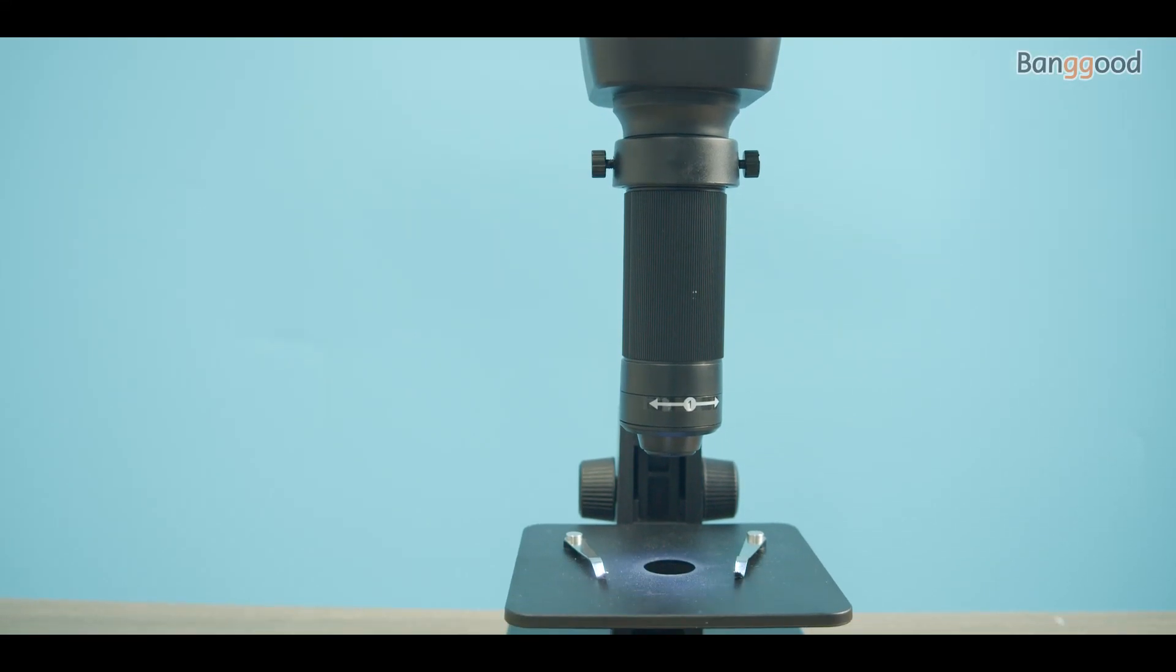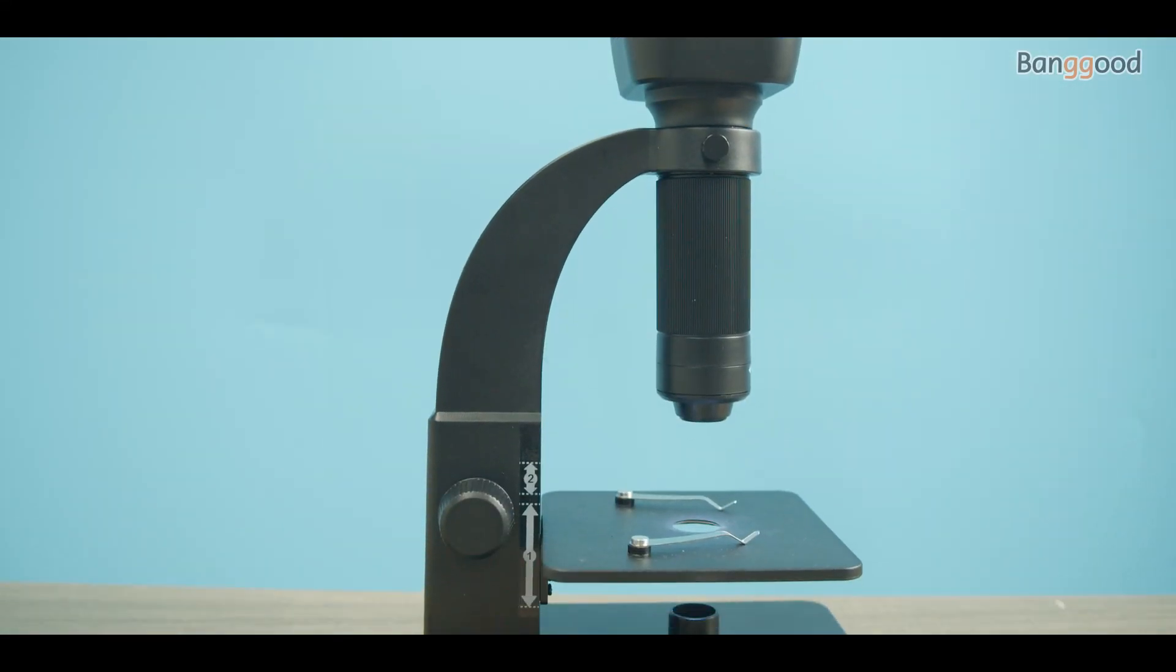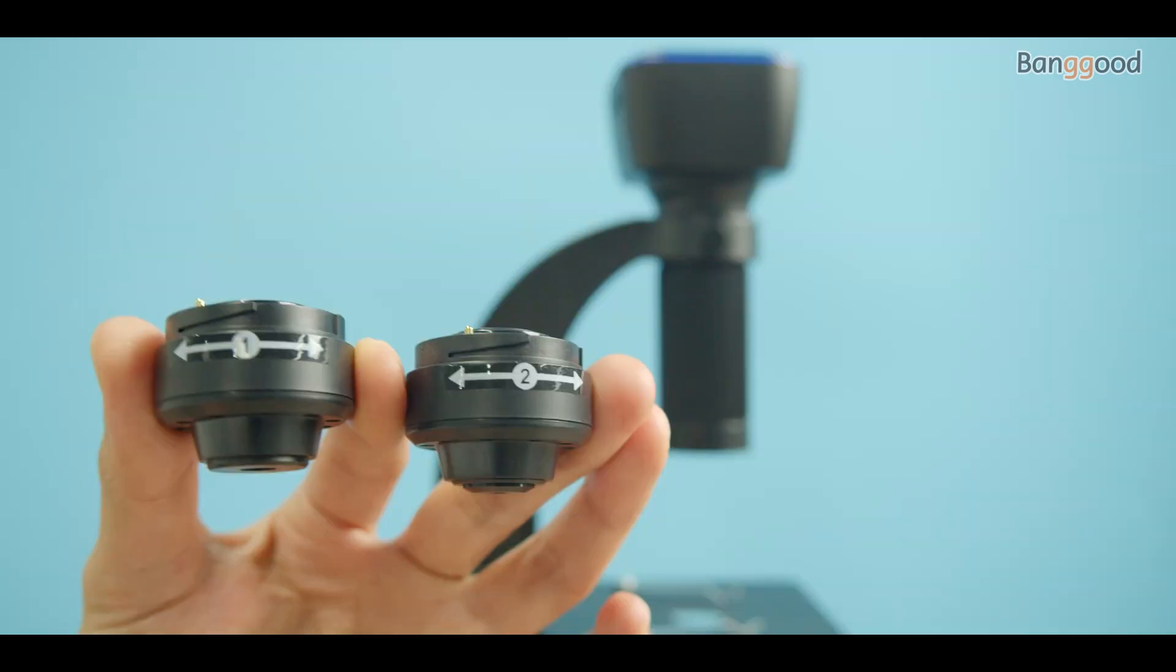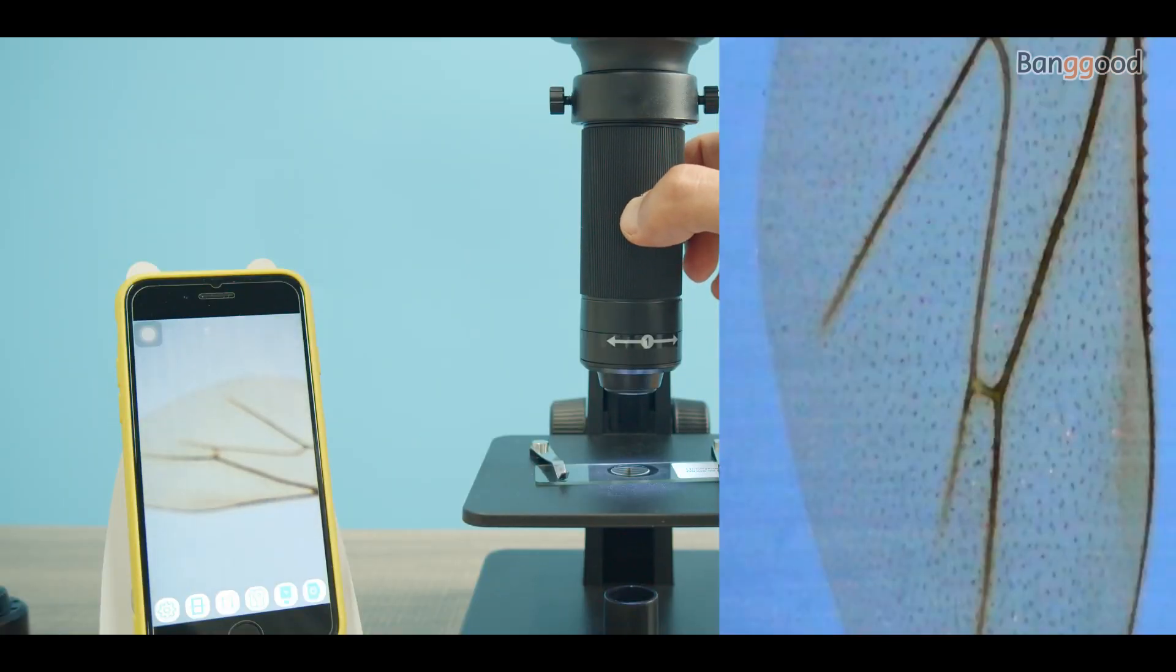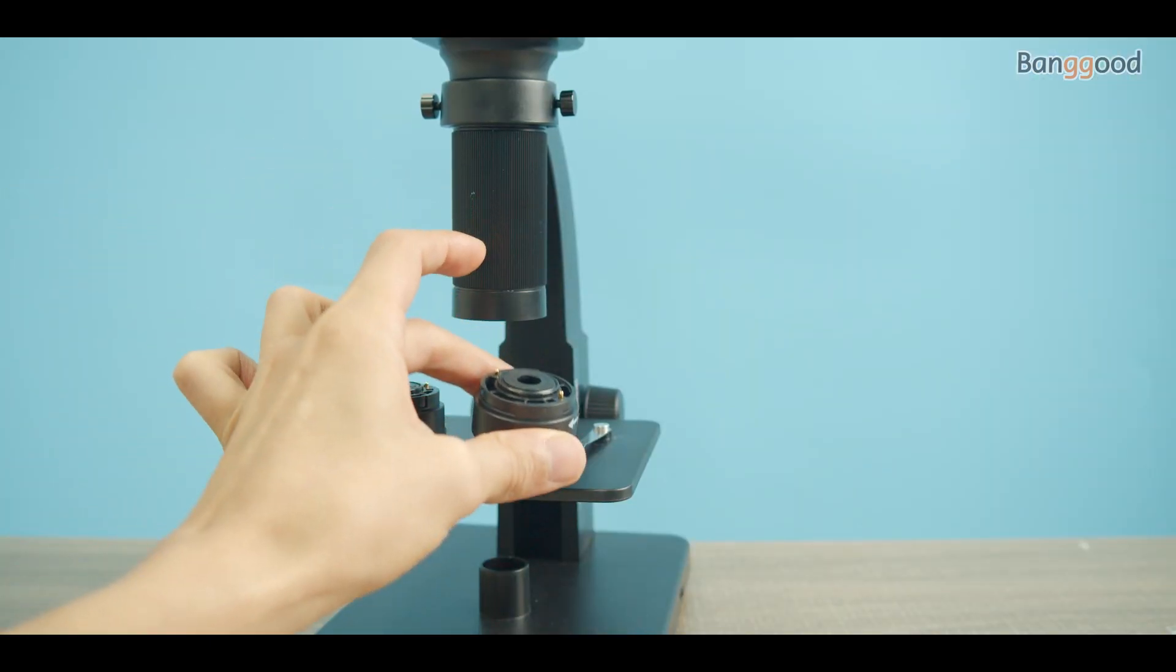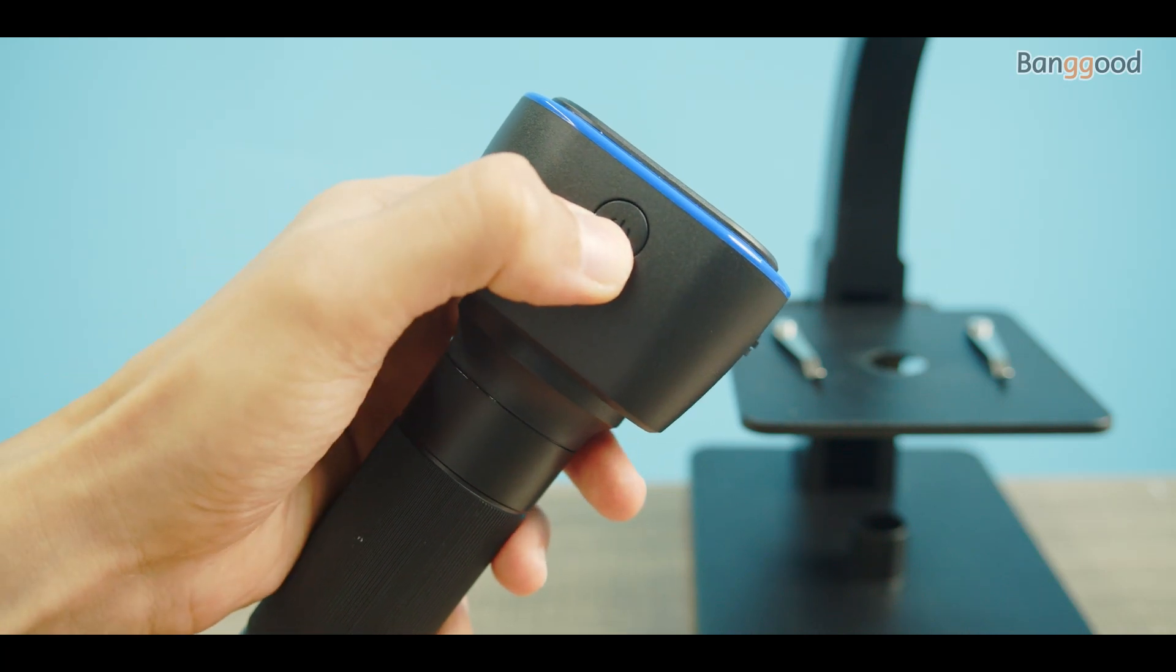Let's take a look at the MASTOOL MT315W digital microscope with dual lenses. Within this video, I will show you the real images from the microscope, user interface, and package included. First of all, let's see the interface.